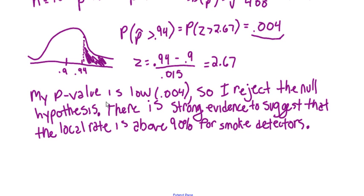Because this p-value is so low, I'm rejecting the 90% rate. Since the chance that we would get a sample of 94% is so small, the billboards and all the efforts they made did make a difference — there is evidence to suggest that the local rate is above 90%. I'm going to stop here so you have time to copy anything down or rewind, and then I'll do another video for example four.